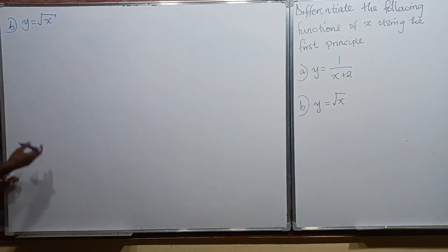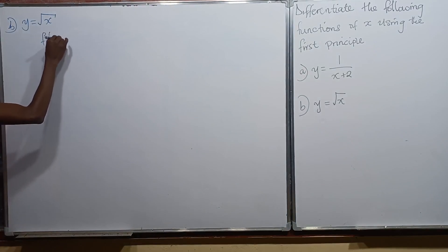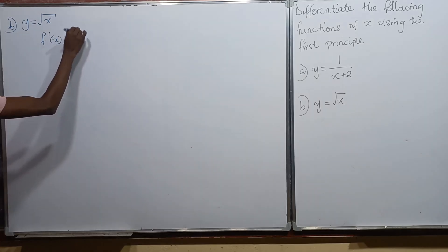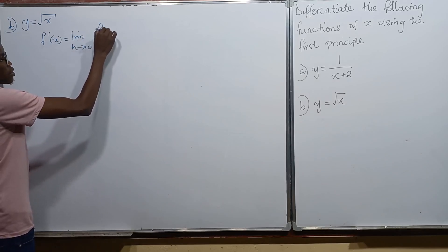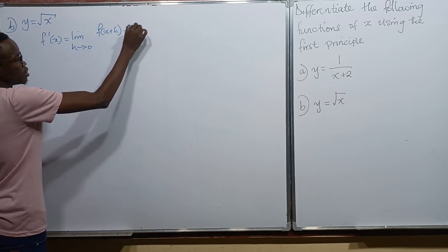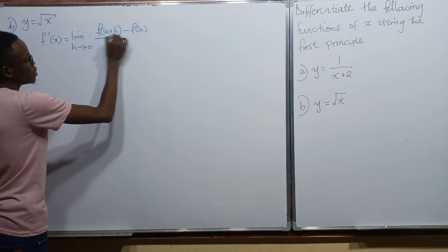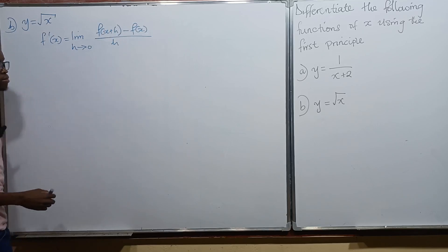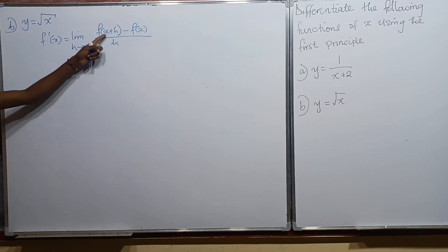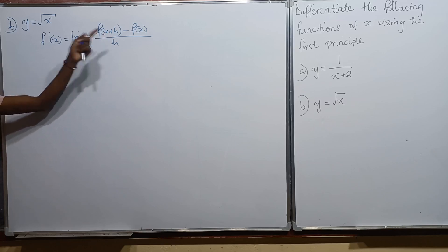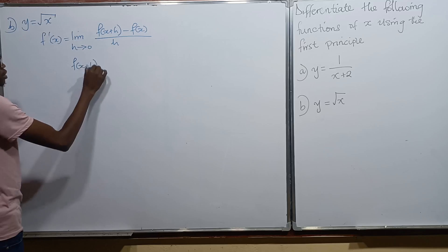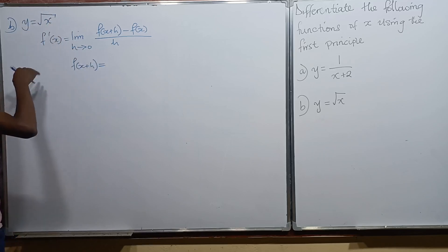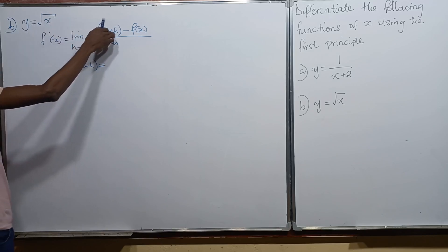First things first, we state the formula for the first principles: f prime of x is equal to the limit as h approaches 0 of f of x plus h minus f of x, divided by h. We need to find our f of x plus h, so everywhere where there's x in the function, we put x plus h.